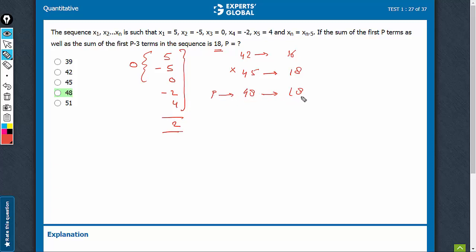Sum of 48 terms is 18, and sum of p minus 3, that is 45 terms, is also 18. Therefore, the value of p is 48. This is one of my favourite questions.